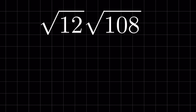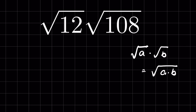Square root of 12 times square root of 108 — how to multiply these radicals. We know that square root of a times square root of b equals square root of a times b. So we can write this as square root of 12 times 108.